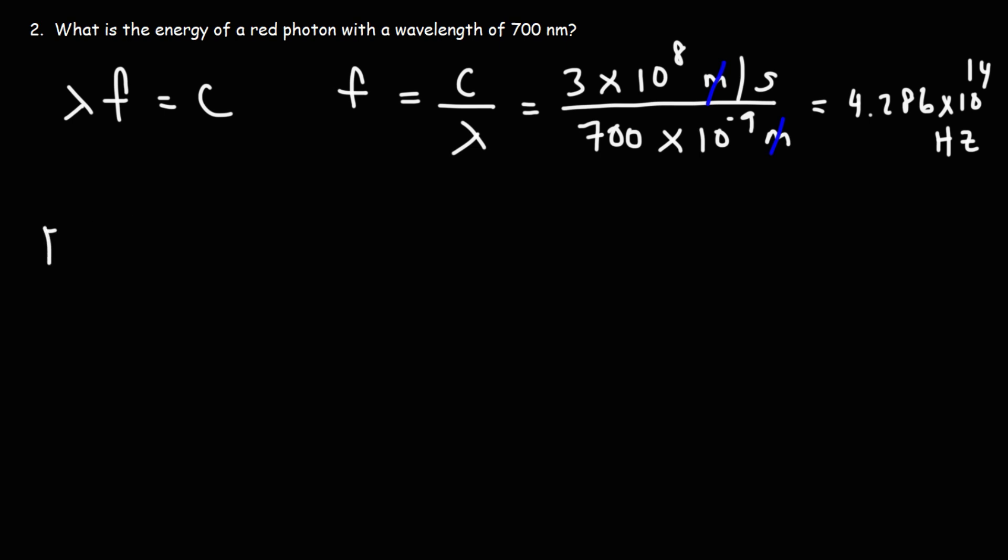Now that we know the frequency, we can calculate the energy of the red photon. So since we're only dealing with a single photon, n is 1, and then we have Planck's constant.